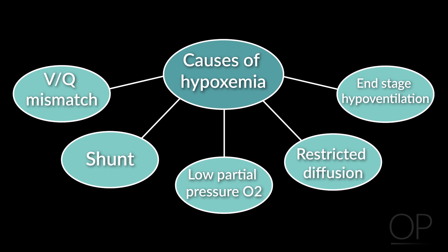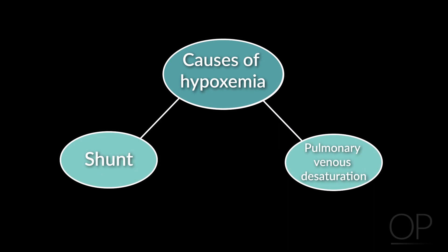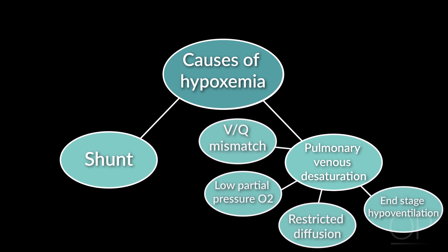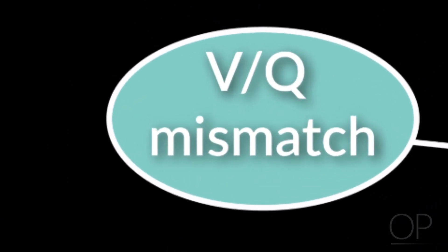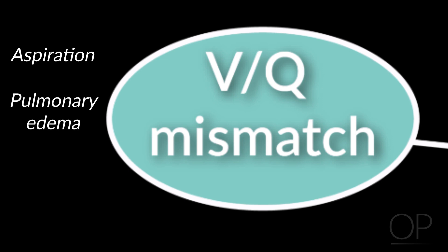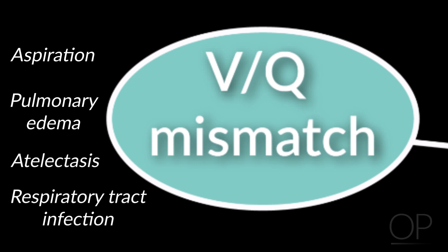You'll often hear cardiologists state that there are two causes of hypoxemia, which are shunt and pulmonary venous desaturation. We tend to lump the other four causes of hypoxemia altogether under pulmonary venous desaturation. Under VQ mismatch, think of possibilities such as aspiration — especially since this patient has been vomiting — pulmonary edema, which in this patient may result from excessive pulmonary blood flow, atelectasis, or a new respiratory tract infection.